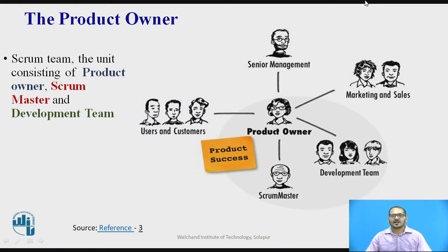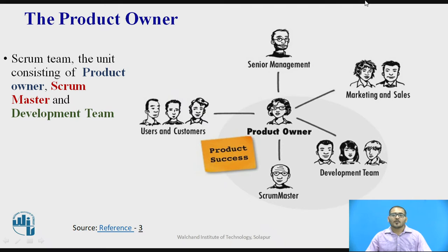The Scrum team — the unit consisting of Product Owner, Scrum Master, and the Development Team — is highlighted to indicate that the Product Owner should have a close and trustful relationship with other Scrum team members. Scrum views the Product Owner as part of the wider Scrum team. This makes sense as great products emerge when the Product Owner takes her market and business knowledge and collaborates with the development team.